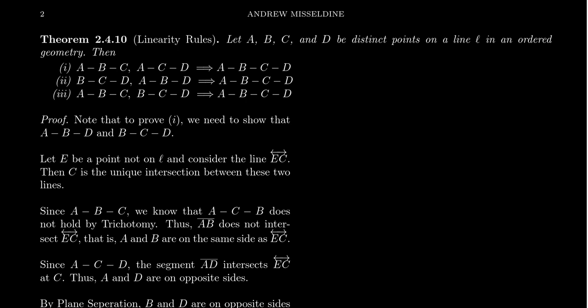So imagine we have a line L, and we have four distinct points A, B, C, D on this line, inside of an ordered geometry — so we have the incidence axioms and the betweenness axioms. The linearity rules tell us the following: if we know that B is between A and C, and we know that C is between A and D, these betweenness relationships can be extended into the four-layer betweenness statement A-B-C-D.